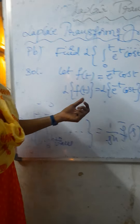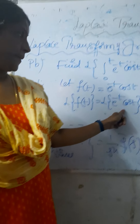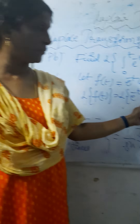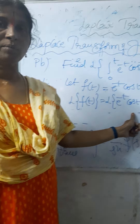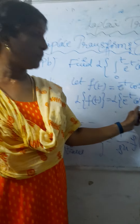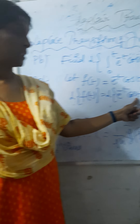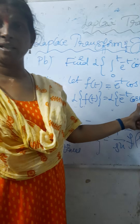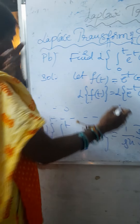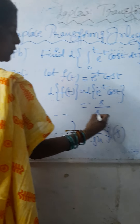The Laplace transform of e to the power minus t cos t — first, what is the Laplace transform of cos at? The formula is s by s squared plus a squared. In place of a, here 1 is there. Therefore, Laplace transform of cos t equals s by s squared plus 1.